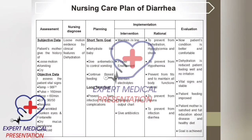Planning — short-term goal: rehydrate the baby, give anti-emetics to control vomiting, continue breastfeeding. Long-term goal: prevent infection and further complications. Implementation and interventions: maintain IV line, maintain proper environment, maintain electrolytes, maintain intake and output chart.